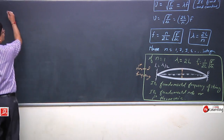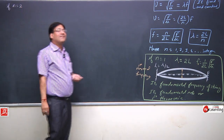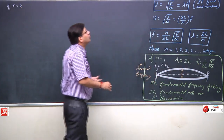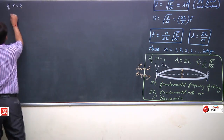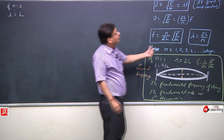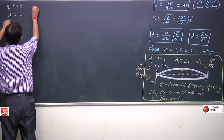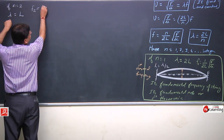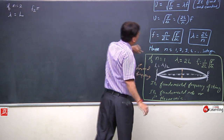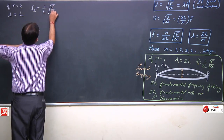If n = 2, then λ = 2L/2, so λ2 = L. In this case, the frequency f2 = 2/(2L) × √(F/μ) = 1/L × √(F/μ). The string vibrates with two loops. This situation is termed as the second normal frequency, also called the first overtone or second harmonic.